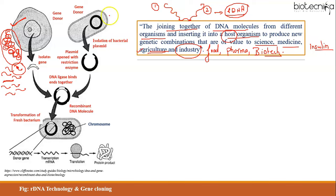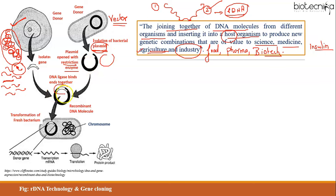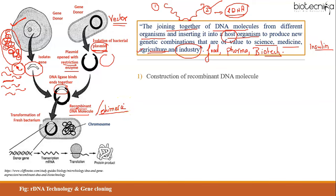We also need another DNA molecule called a vector — a vehicle that carries our gene of interest. The vector can be a plasmid, cosmid, bacteriophage, or artificial chromosome. A bacterial plasmid is an extrachromosomal self-replicating genetic element present in bacteria. The plasmid is opened by digesting it with a restriction enzyme, and then DNA ligase joins the gene-of-interest fragment to the vector, constructing the recombinant DNA molecule — also called a chimera.